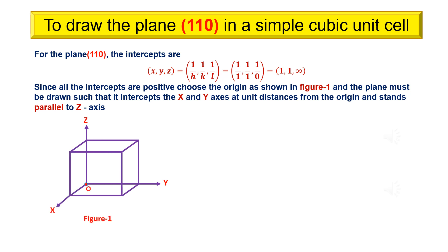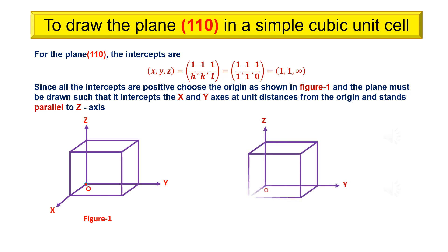For the plane (1 1 0), the intercepts are x, y, z equals 1, 1, infinity. Since all the intercepts are positive, choose the origin as shown in figure 1. Then draw the plane such that it intercepts the x and y axes at unit distances from the origin and stands parallel to the z axis.